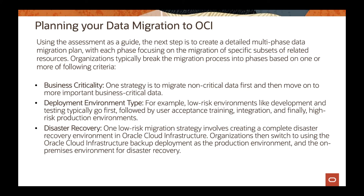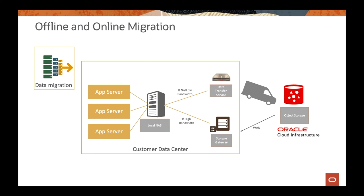In the next portions of the video, we're going to talk about two different types of migrations: offline migration and online migration. For offline migration, we're going towards the data transfer service and some options to move data from on-premises to OCI. For online migration, we're going to cover the storage gateway, where you can copy data over and then send it to OCI. There are also other ways to do online migration, like FastConnect or IPSec VPN, but we're going to focus on data transfer service and storage gateway.